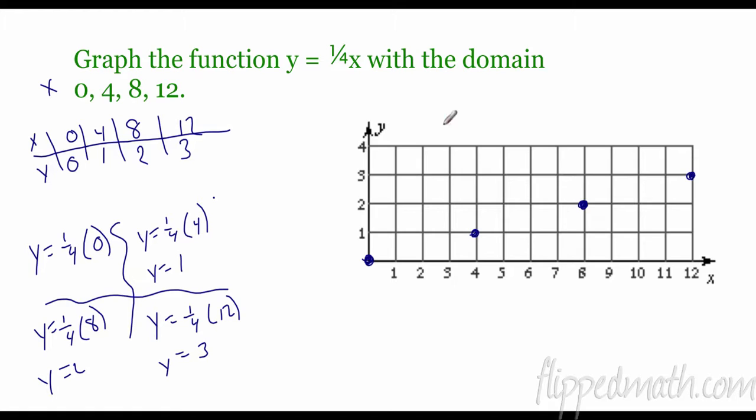And right there you have, now we have our rule. We have our domain, our X values. We have our range, our Y values. We have our coordinates, zero, zero, four, one, eight, two, 12 and three. And we have the graphical representation right there.